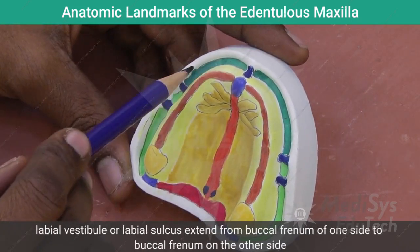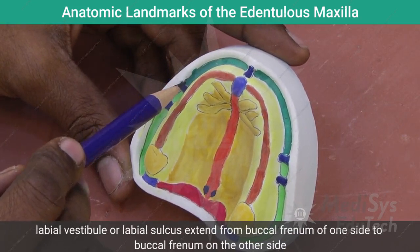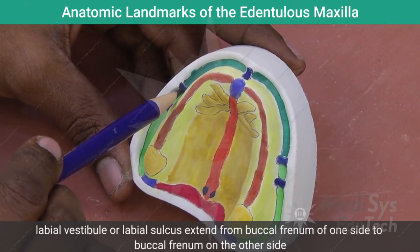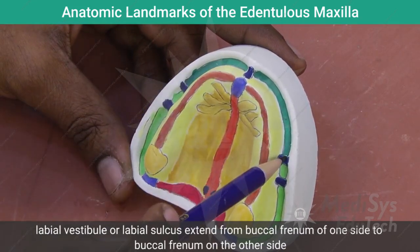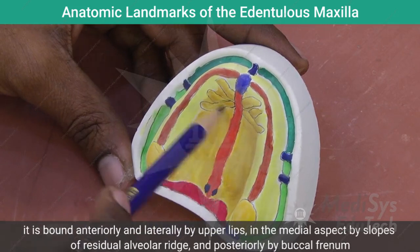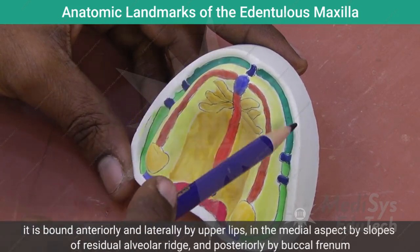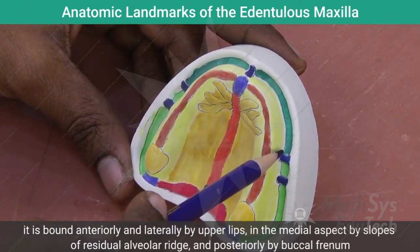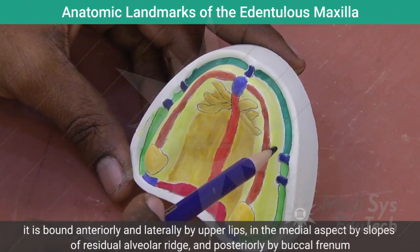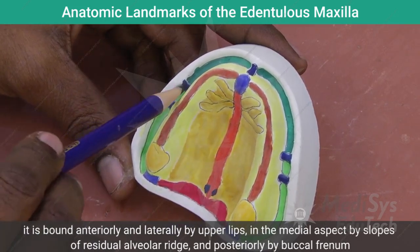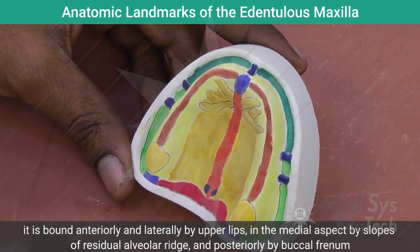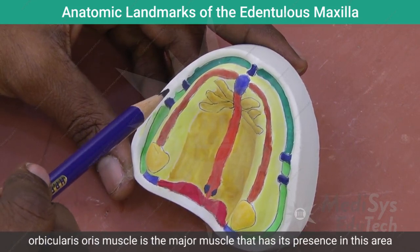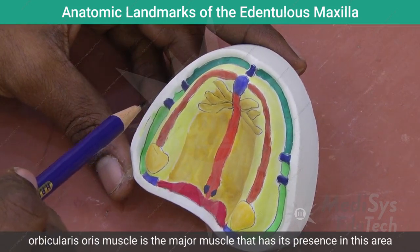The labial vestibule or the labial sulcus extends from the buccal frenum on one side to the buccal frenum on the other side. It is bound anteriorly and laterally by the upper lip, medially by the slopes of the residual alveolar ridge, and posteriorly by the buccal frenum. The orbicularis oris muscle is the major muscle present in this area.